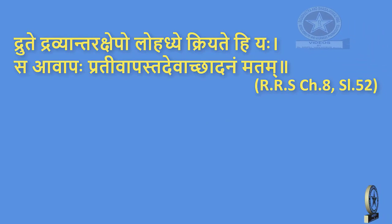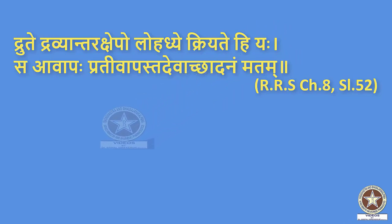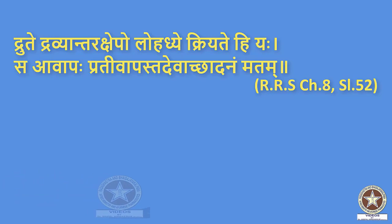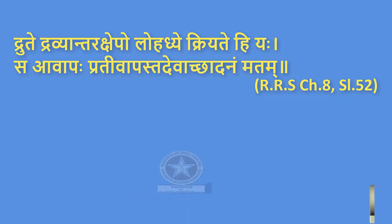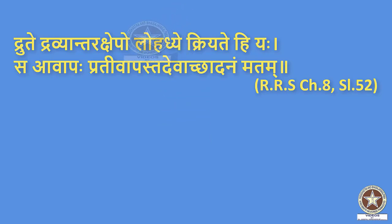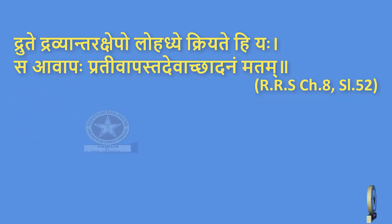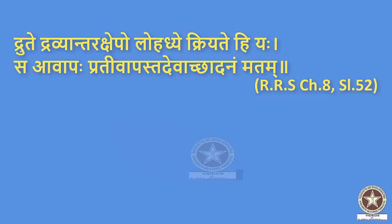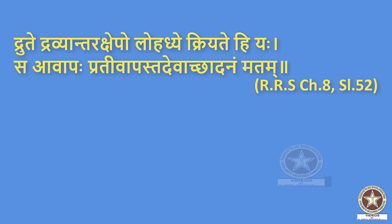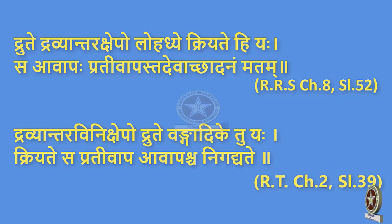The second procedure: Avapa. Reference: Rasaratna Samuchaya, Chapter 8, Shloka 52 — 'Dhruthe Lohadye Dravyantaraakshepo Kriyate Hiyah Saavapah Prativapah Tadeva Aachadhanam Matam.' Loha Adhi or metals are heated till they turn to druta or molten state. Dravyantaraakshepo means addition of dravyas to the molten metal. This procedure is called Avapa, Prativapa and Achadana.